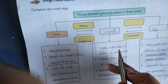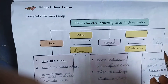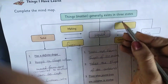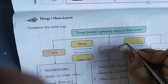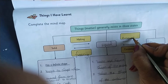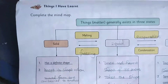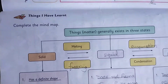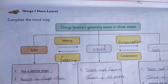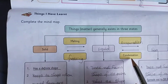And next, these solids, liquids, and gases can change through processes: melting, freezing, condensation, and evaporation. So these four processes we can observe in the three states — solids, liquids, gases. We can observe melting, freezing, evaporation, and condensation.